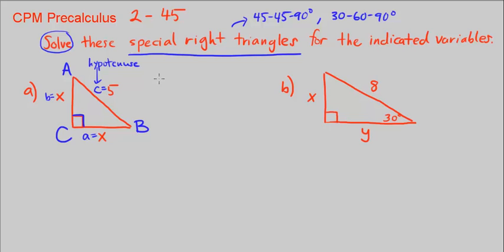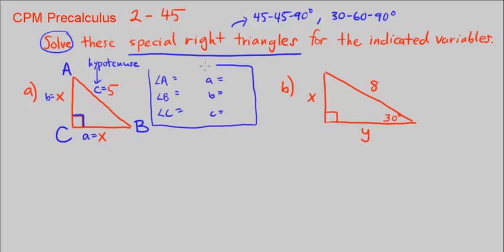My solution will include angle A, angle B, angle C, and side a, side b, side c. For Part A, let me fill in what I know: angle C is the right angle, which is 90 degrees; side c is 5 units. And I know both sides b and a are x, so I can write a = x and b = x.